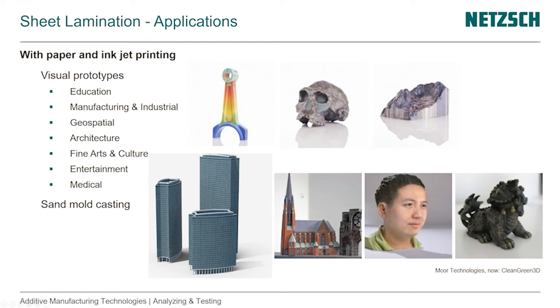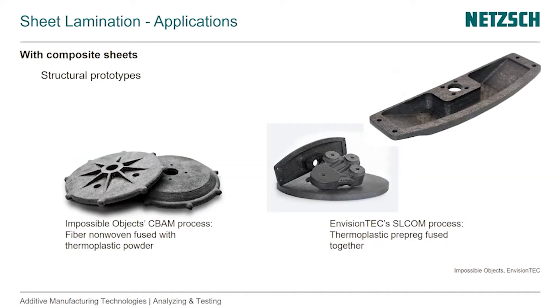Entertainment and some medical applications. It's sometimes also used for sand casting. One process worth touching on is using composite sheets instead of paper. The two processes — Impossible Objects' CBAM process — use non-woven fibers. It can be carbon, glass, or other materials, and they fuse the individual layers with a thermoplastic powder.